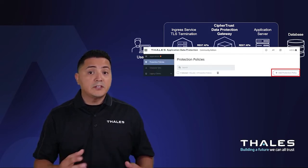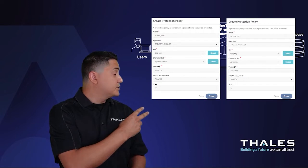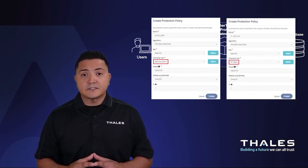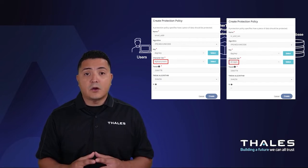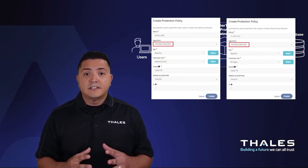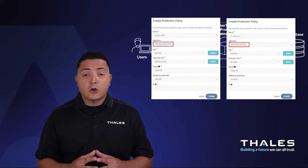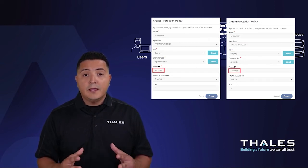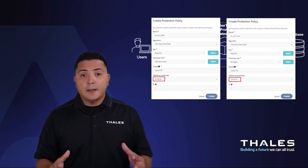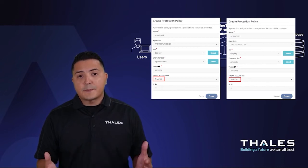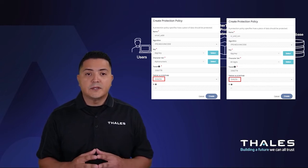I'll start by creating two new protection policies — one focused on matching against alphanumeric characters, and another focused on all digits. We'll give each one a name, specify the algorithm, the encryption key that I created earlier, and a tweak plus an algorithm for the tweak to do some sort of format-preserving encryption with the data.